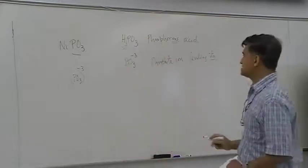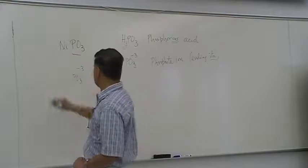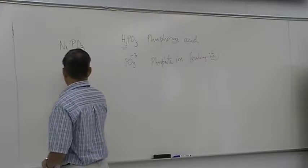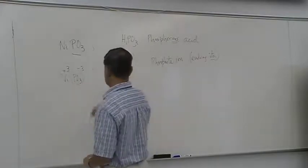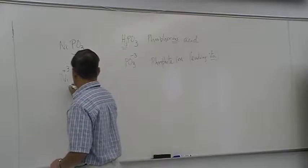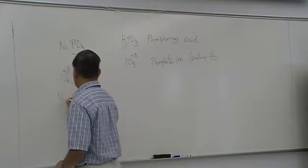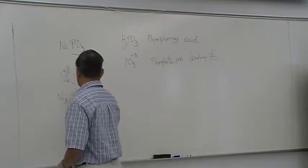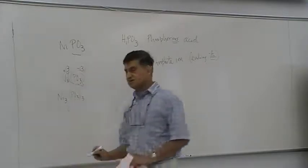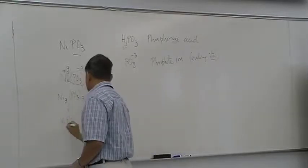And obviously nickel is from transition elements, so it can have plus two or plus three. So if nickel is plus three, and this is minus three, we already know from the acid. Now this three goes down here, and this three goes down here. So you basically get Ni3PO3 3, and in most cases, you get the smallest ratio, which is one-on-one, NiPO3. So this is fine.